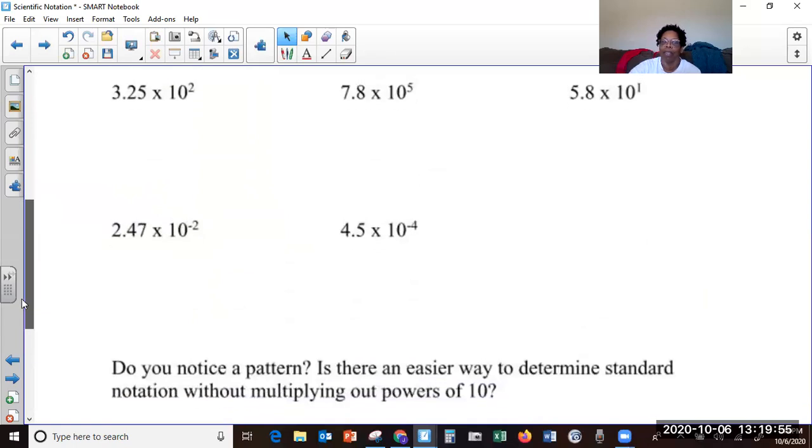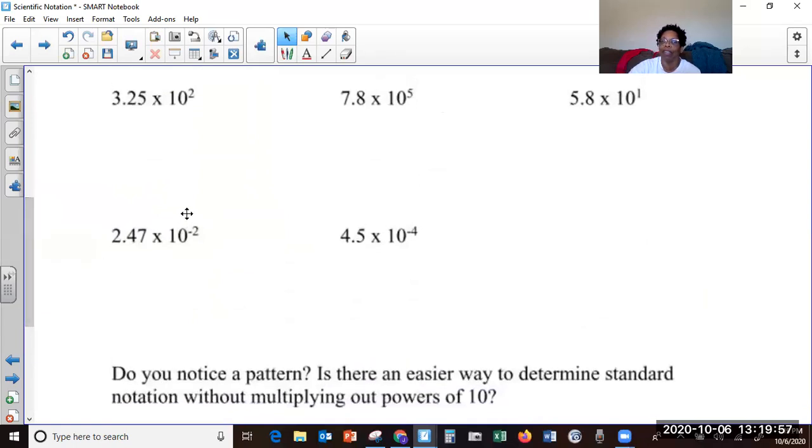So let's practice. All these are written in scientific notation. See the first digit is less, it's nine or less, but more than one. So they're all written in scientific notation. How do we write them in standard form, standard notation?